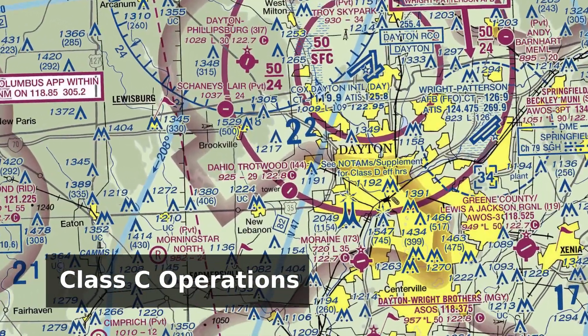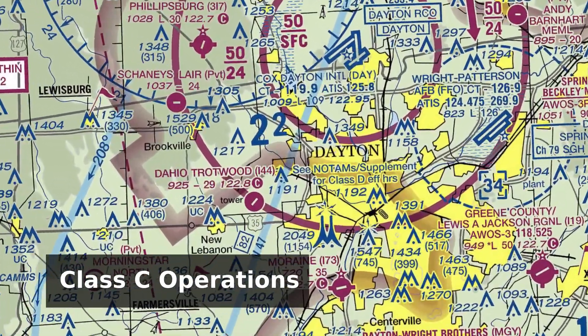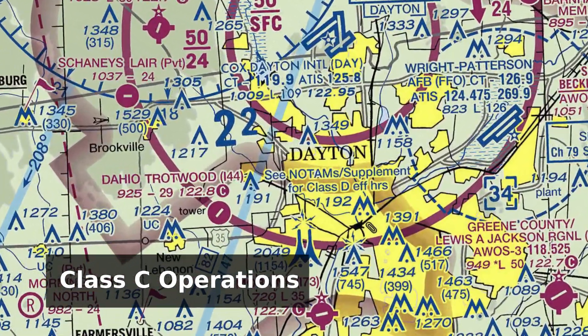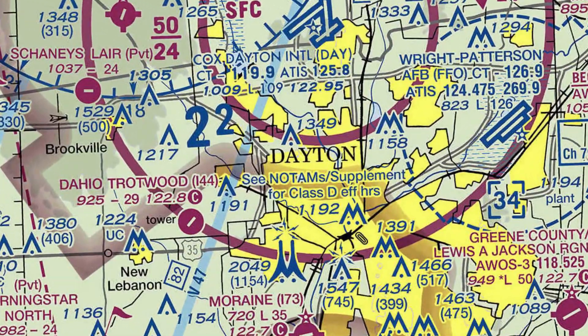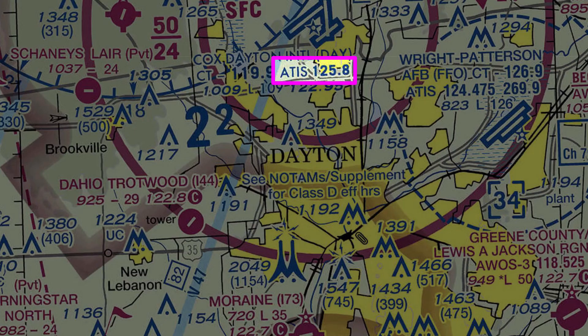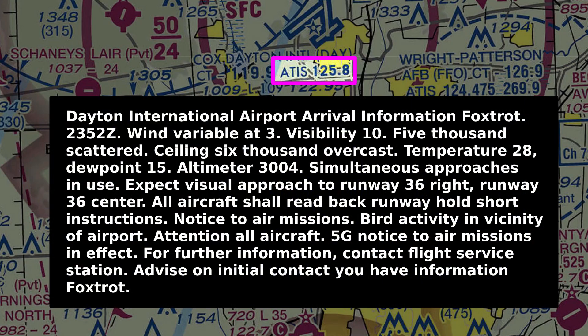When approaching a Class Charlie Airport, start by tuning in the Automatic Terminal Information Service, or ATIS, using the frequency shown on the chart. Write down the code letter associated with the update that you receive, because you'll be giving that information to air traffic control when you check in.